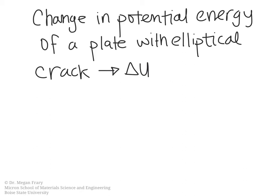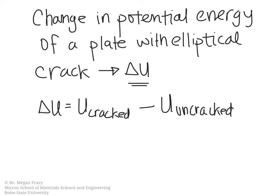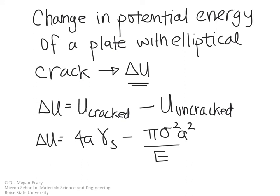We are interested in assessing that energy balance, so we consider the change in potential energy of a plate with an elliptical crack, which we call delta U. Delta U is given by the difference in energy of the material with the crack compared to without the crack. In general, that change is the surface energy created minus the elastic strain energy which is released.